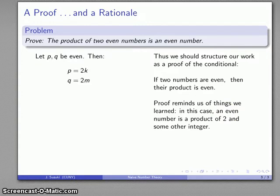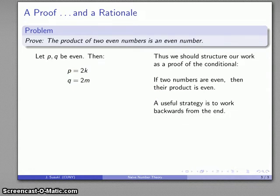So I know that p is 2 times something, q is 2 times something. At this point, if you don't see how it's going to proceed, a useful strategy is to work backwards from the end. It's very important because frequently when students do a proof of this type, they make a major mistake in setting up the proof.